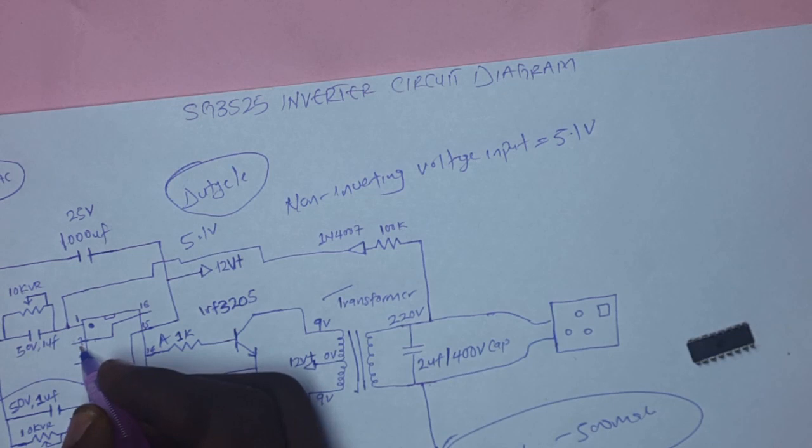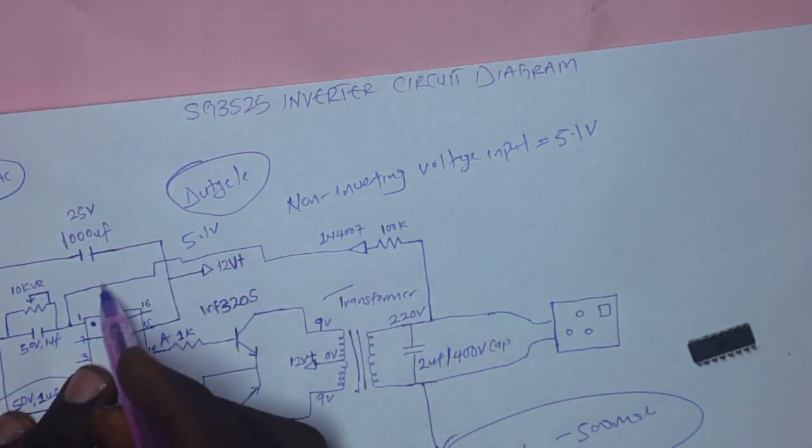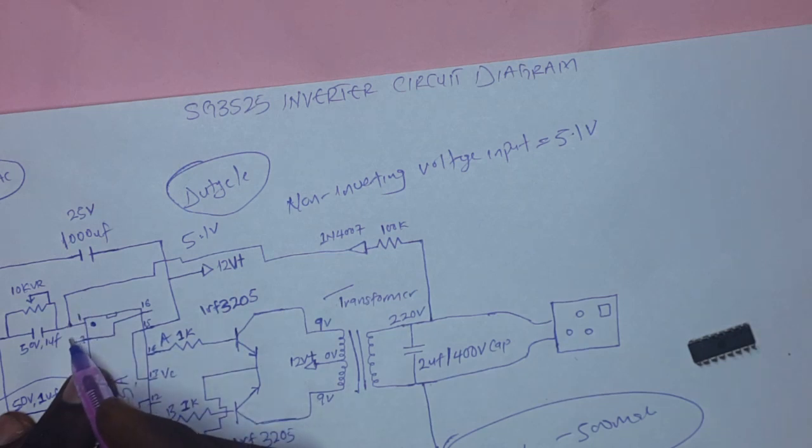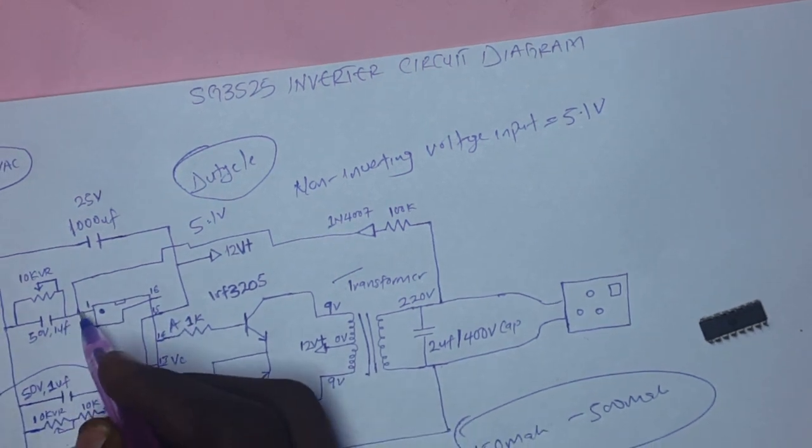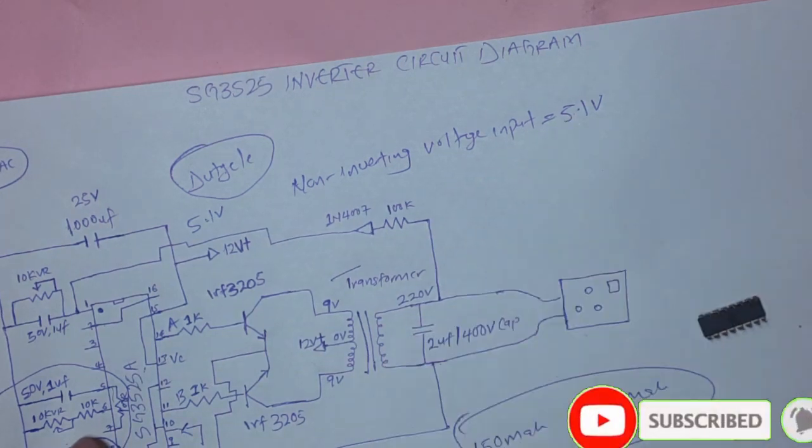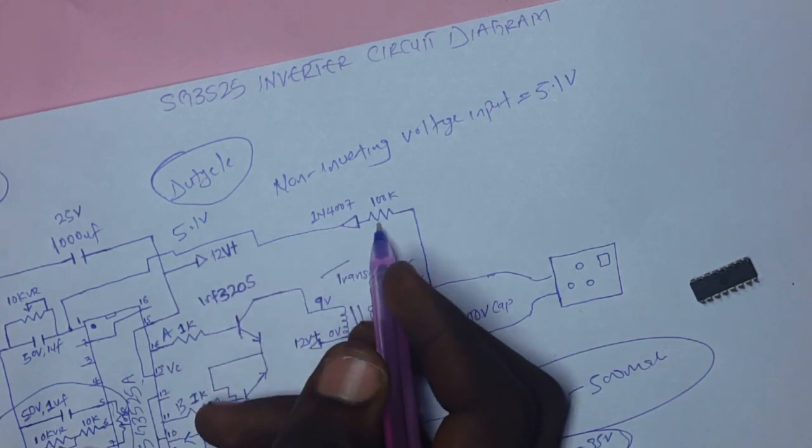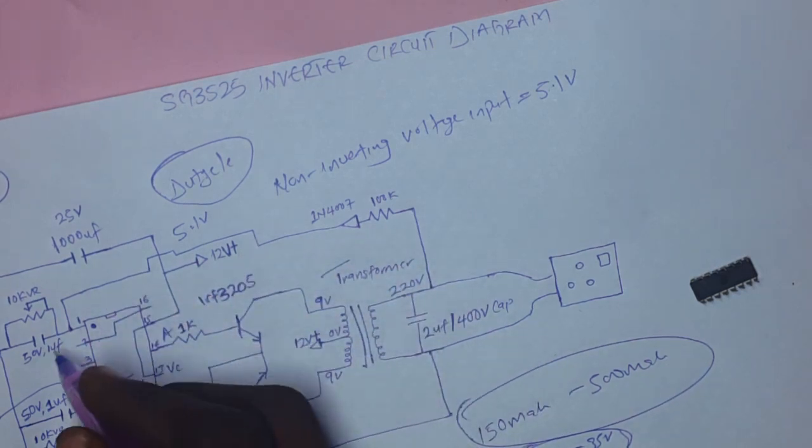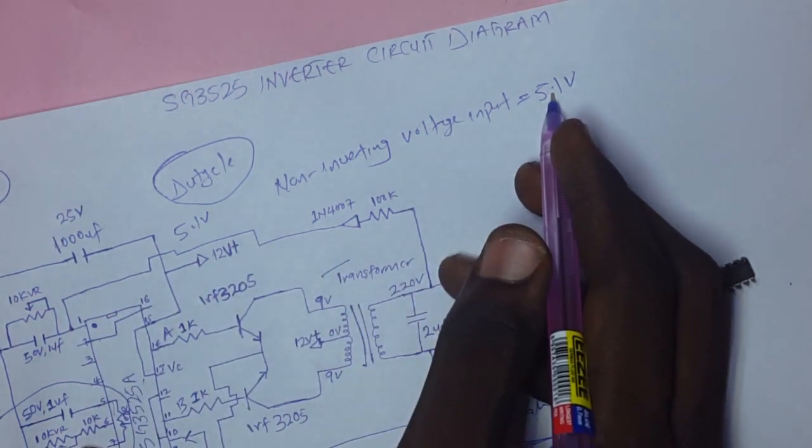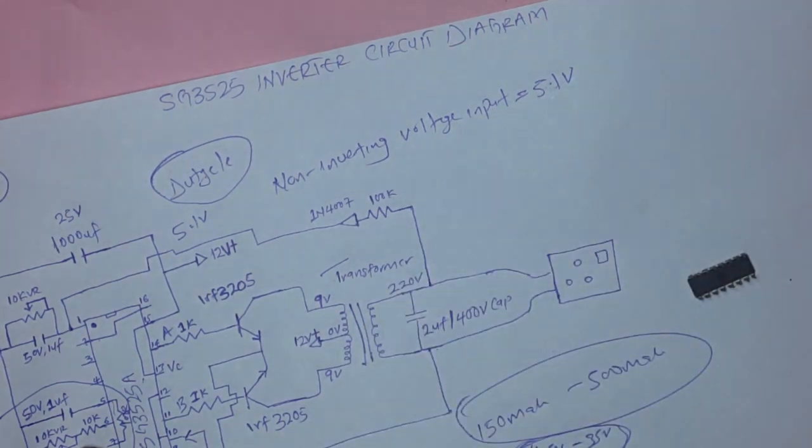Since the non-inverting input is 5.1 volts, our feedback voltage here is greater than 5.1 volts. If the feedback voltage is greater than 5 volts, the duty cycle will decrease.